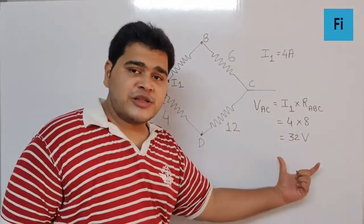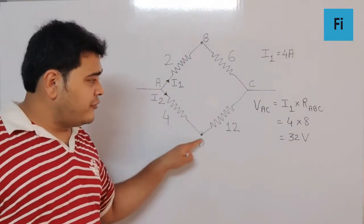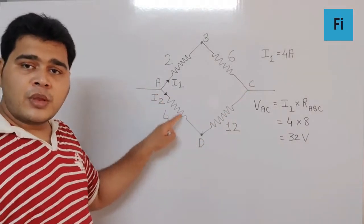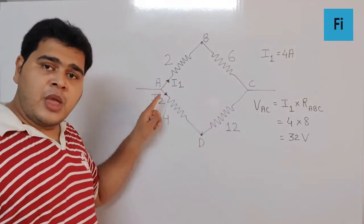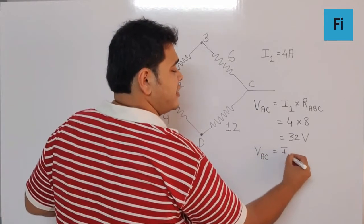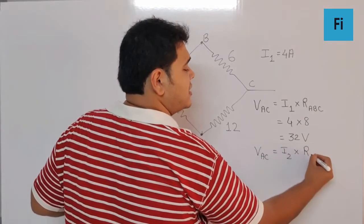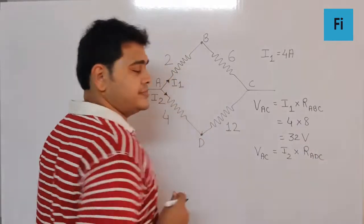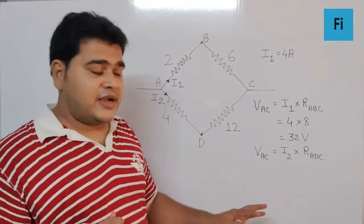can say the same potential difference will exist for this branch also. Are we clear on this? Which means I can also say V_AC is equal to I2 into R_ADC, so I can find the current...